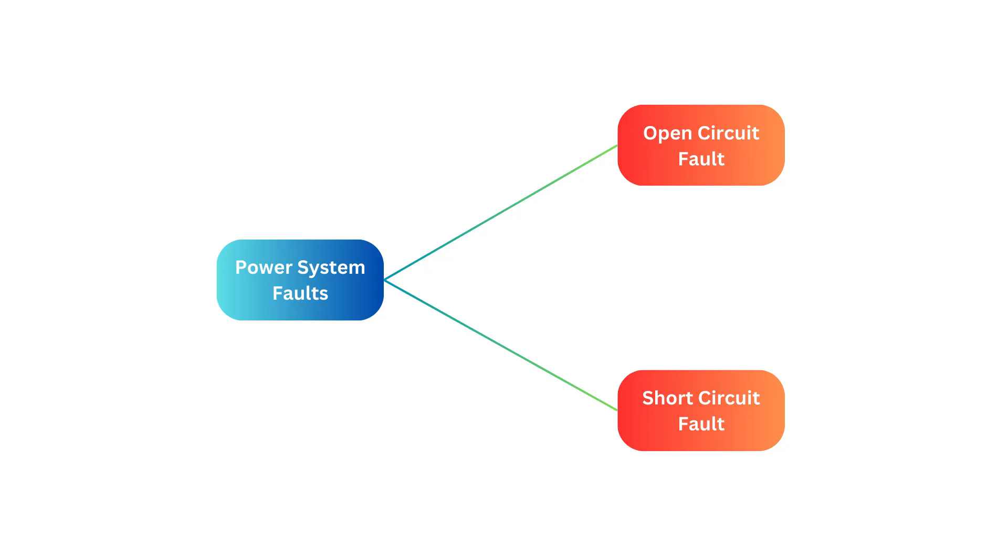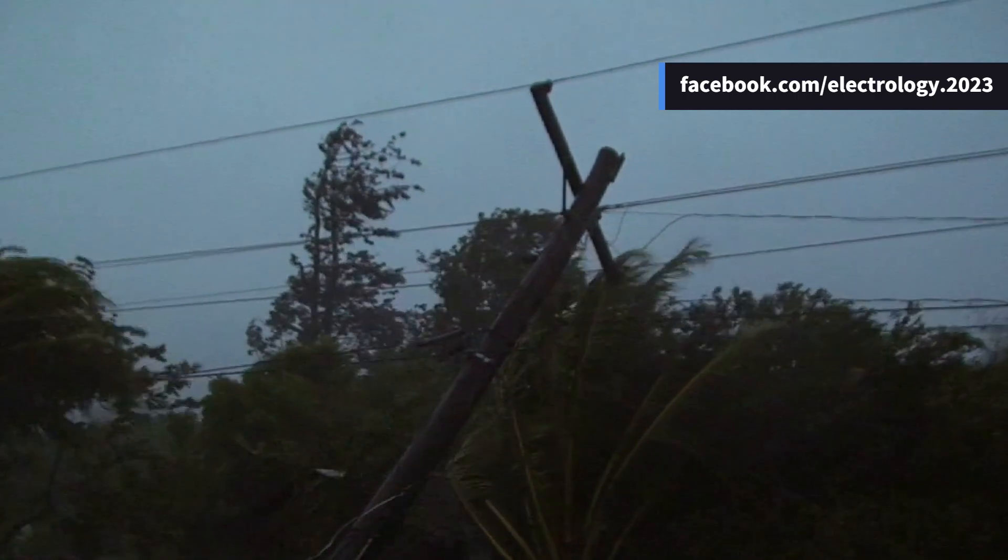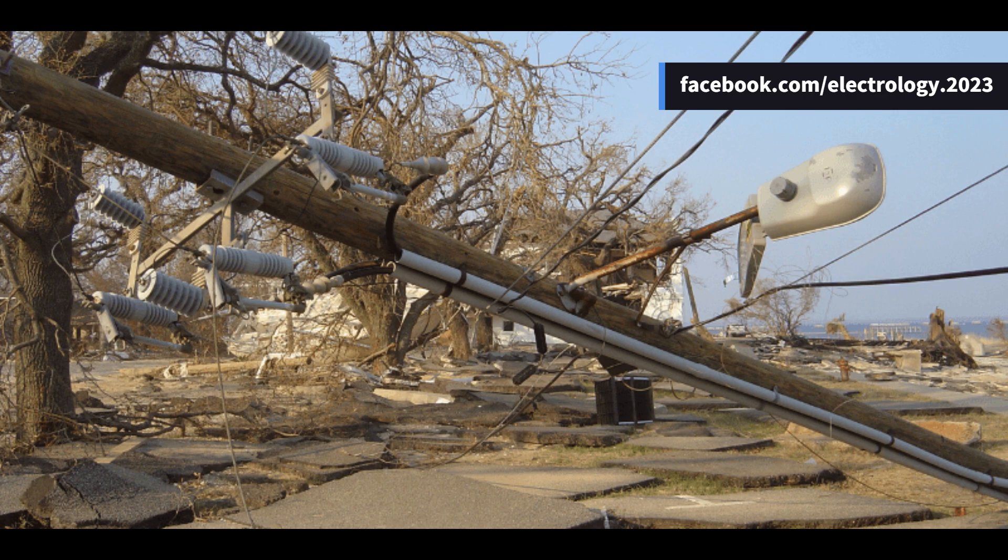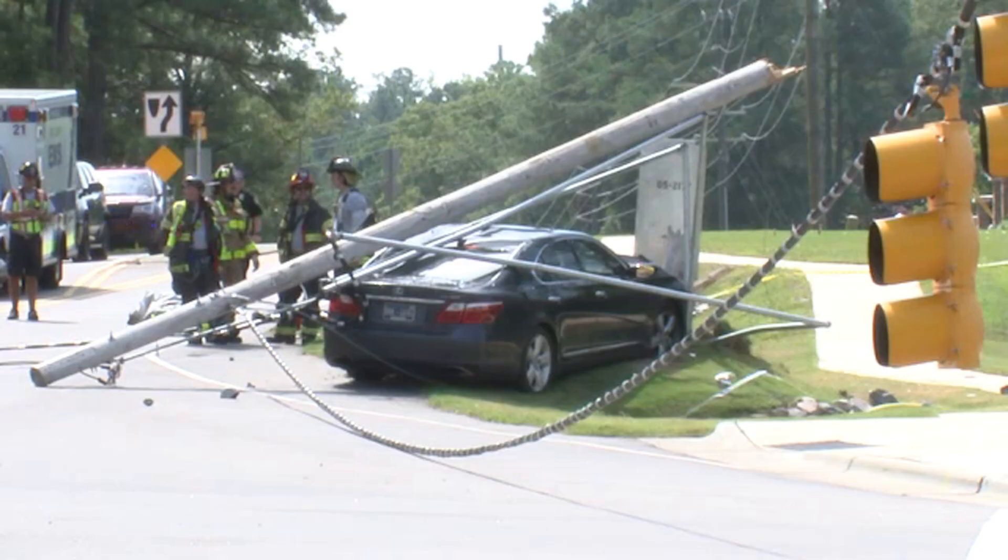Power system faults can be categorized into two main types: open circuit fault and short circuit fault. These faults can be caused by natural disturbances like lightning, high-speed winds, earthquakes, or accidents such as falling trees, vehicle collisions, etc.